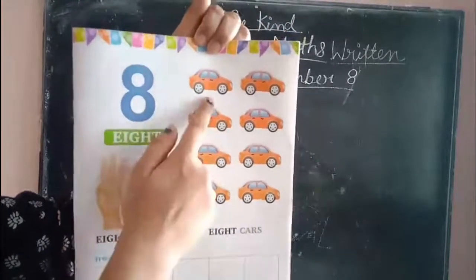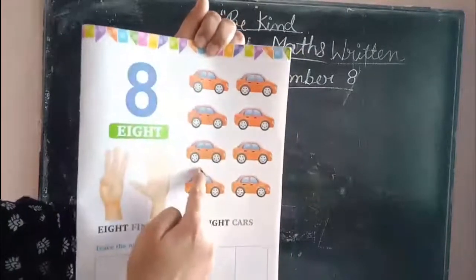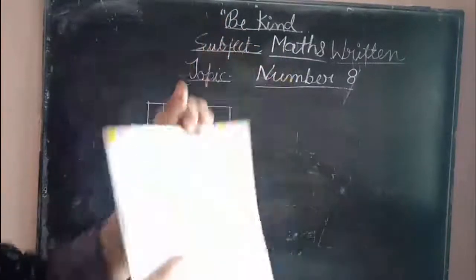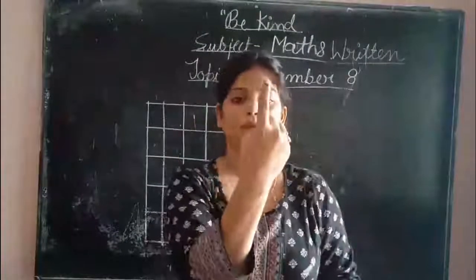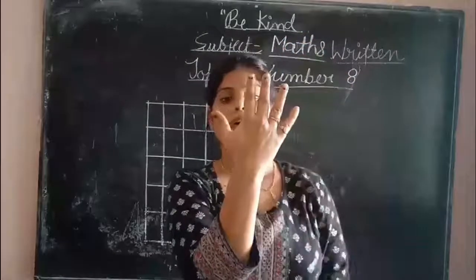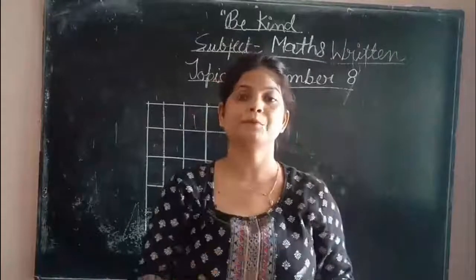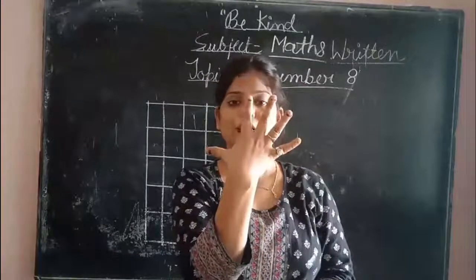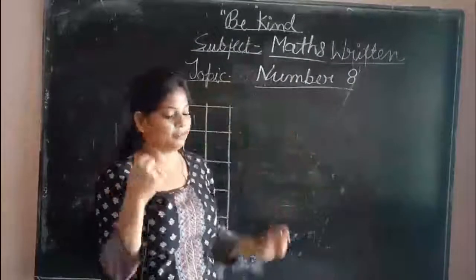Repeat again: 1, 2, 3, 4, 5, 6, 7, 8 — that means number 8. Let's count again: 1, 2, 3, 4, 5, 6, 7, 8. Let's count once more: 1, 2, 3, 4, 5, 6, 7, 8 — means number 8.